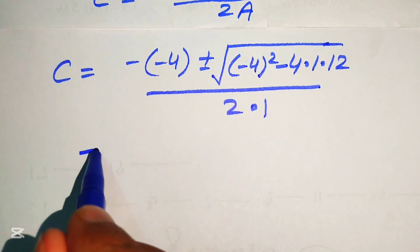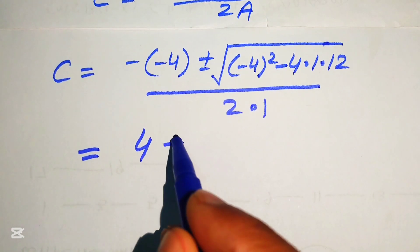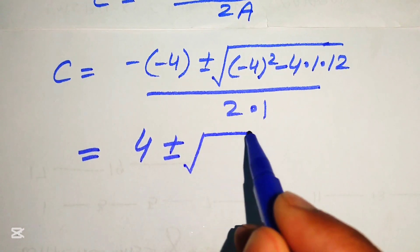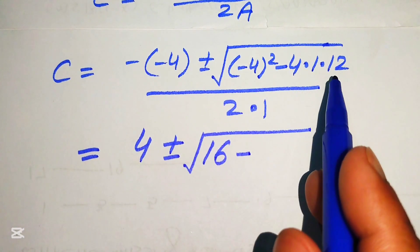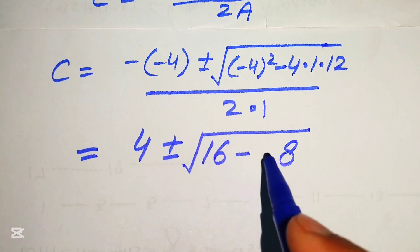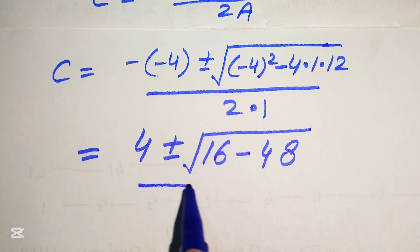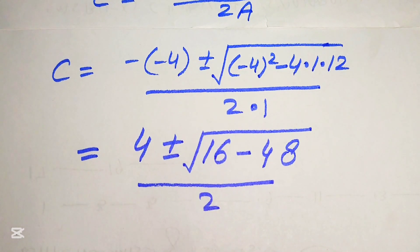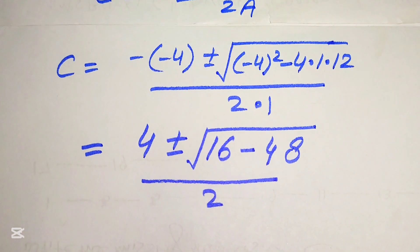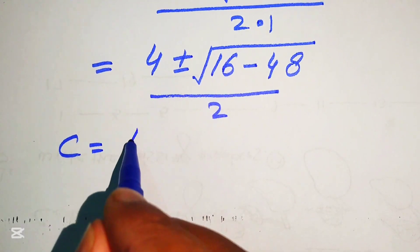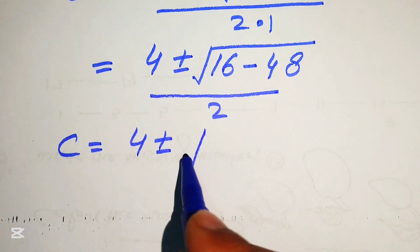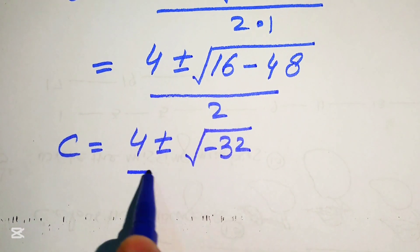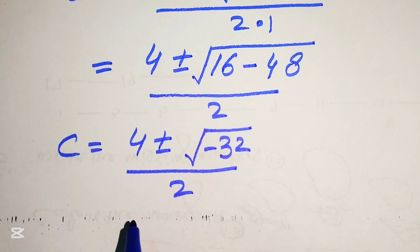Simplifying: minus times minus becomes plus 4, plus or minus square root of 16 minus 48, which equals minus 32, divided by 2. So we have c equals 4 plus or minus square root of minus 32, divided by 2.